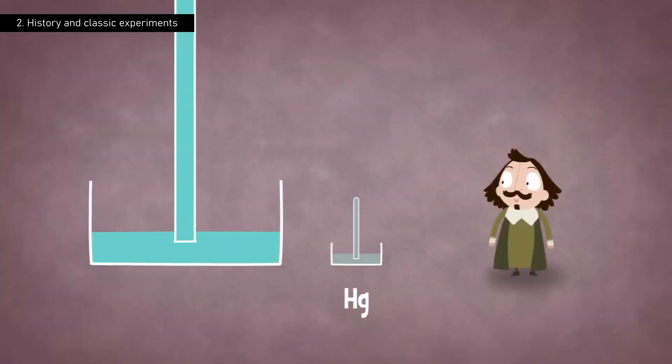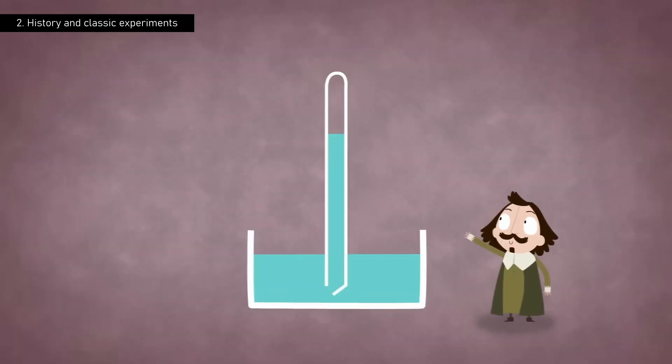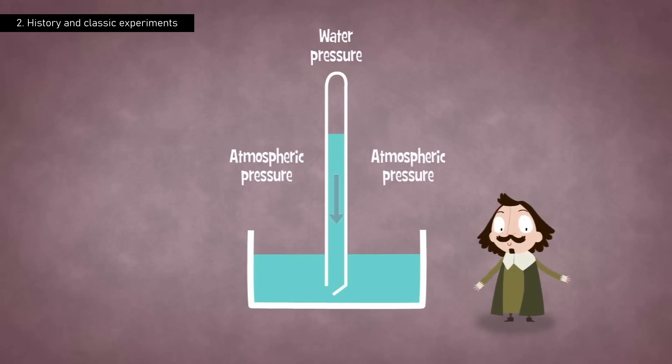Upon uncapping the tube, something fascinating happened. The mercury descended, but not completely. It stopped at 76 centimeters in height, leaving a vacuum space at the top. Torricelli concluded that the weight of the air exerted pressure on the liquid in the vessel, countering the force of gravity and preventing the rest of the mercury from overflowing.